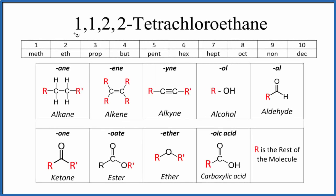Let's write the structural formula for 1,1,2,2-tetrachloroethane. The first thing we notice is it ends in -ane, which means it's going to be an alkane. We're going to have carbons attached to hydrogens, all single bonds.